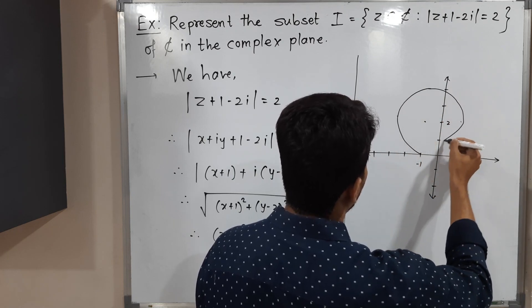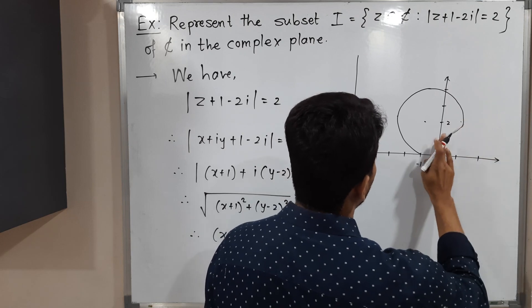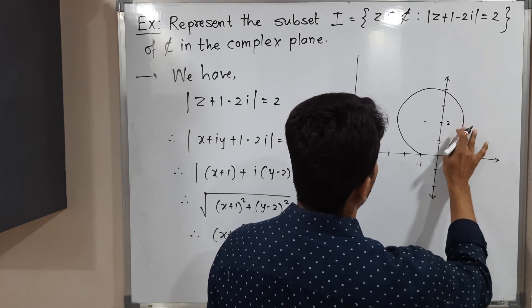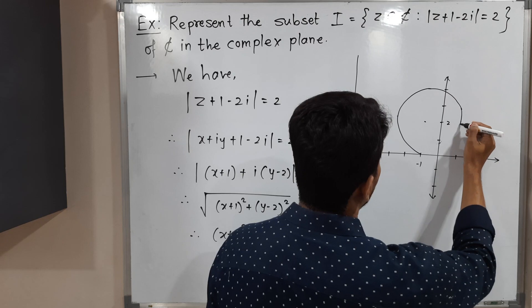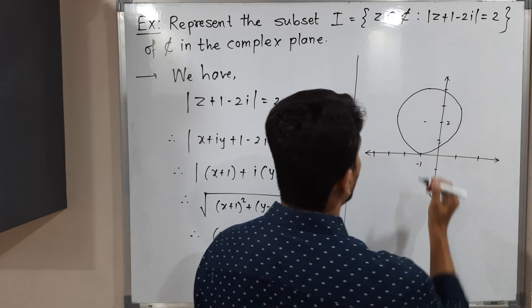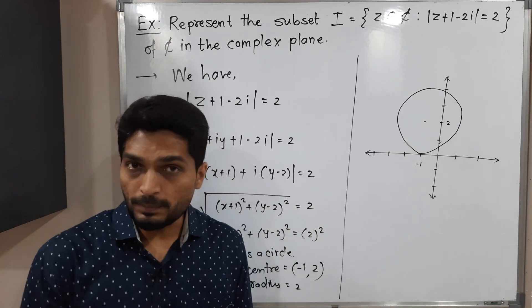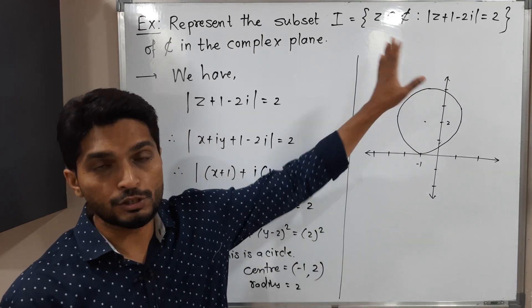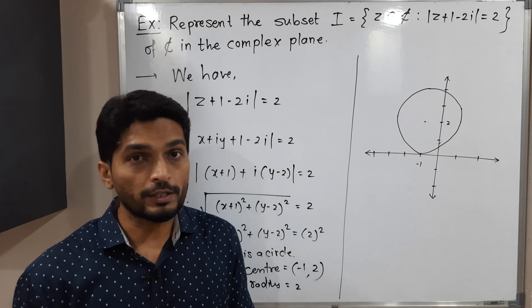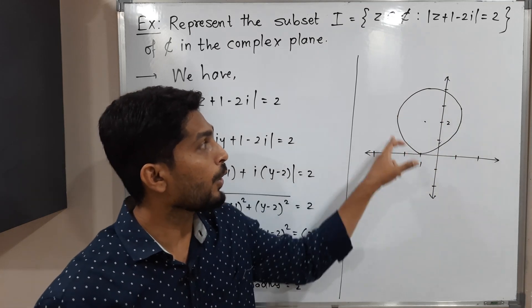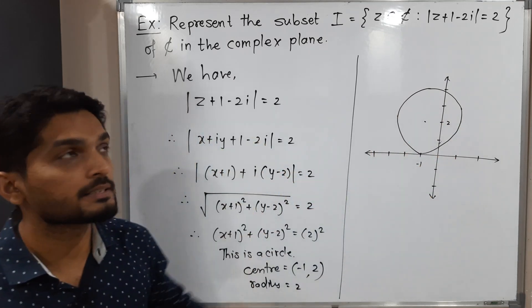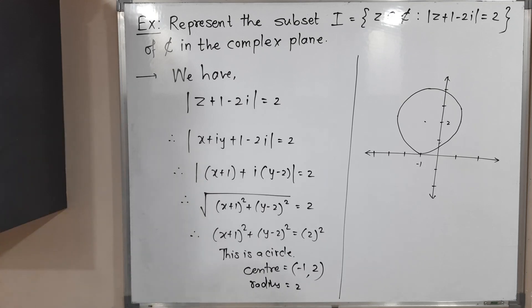Let me draw that circle properly. We have a circle like this. It's the set of all complex numbers that satisfy that condition, which means the points which lie on this circle. So that is nothing but our set I. Make a screenshot of it, then we will stop. Thank you, see you.